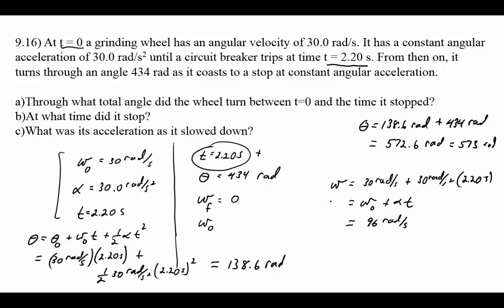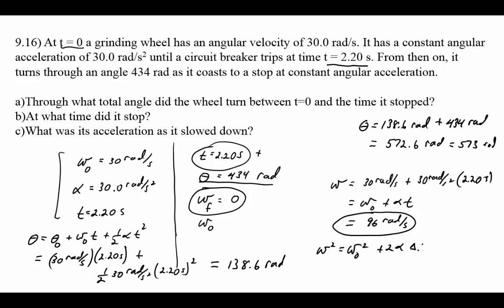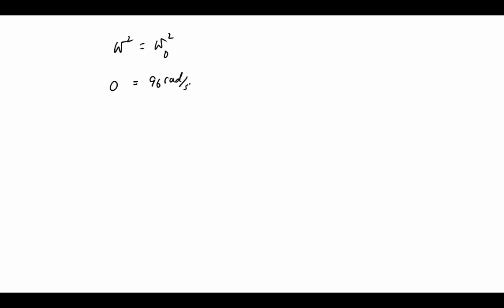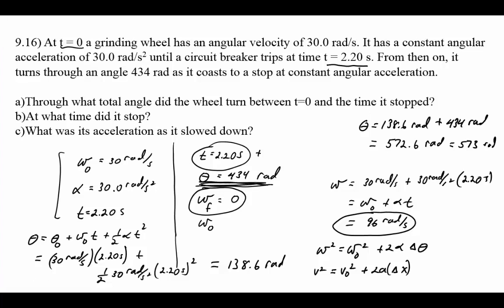That comes out to 96 radians per second. So at the beginning of the second phase, omega naught is 96 radians per second; omega final is zero; and it passes through 434 radians. Using omega squared equals omega naught squared plus 2 alpha delta theta — the angular equivalent of v squared equals v naught squared plus 2a delta x — with omega equals 0, omega naught equals 96 radians per second, and delta theta equals 434 radians.